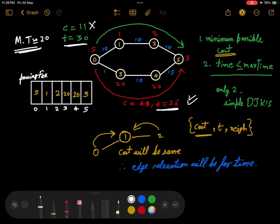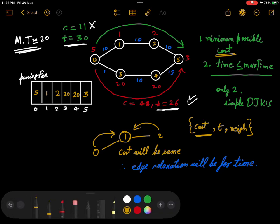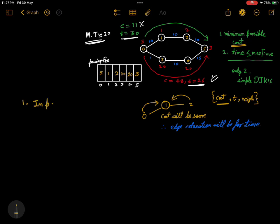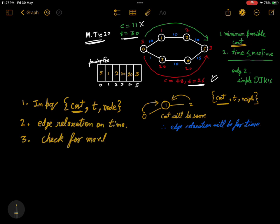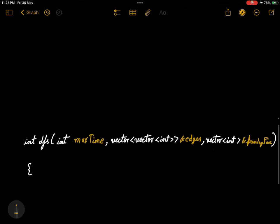We got three observations from here: in the priority queue, the first element should be the cost, then time and node. Then we will do edge relaxation based on the time. And we will check for the max time during the edge relaxation. So let's see in the code how we're going to do it.